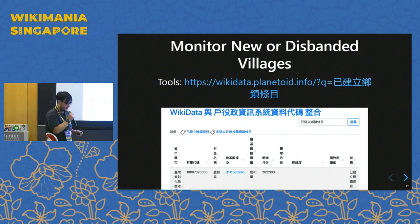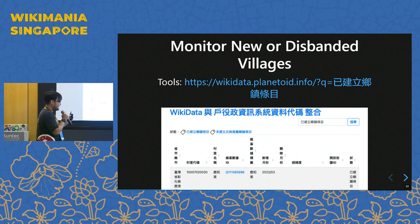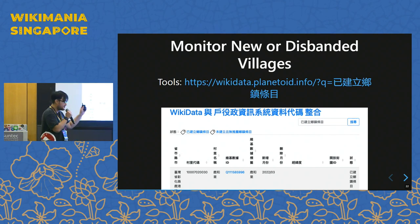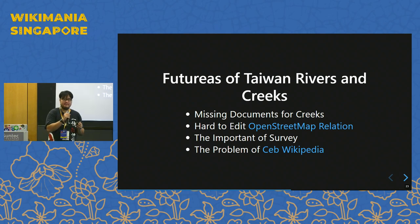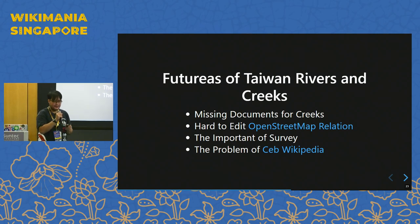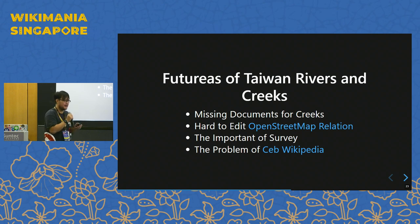We have some ability to cross-link using programs that monitor the government datasets. If there is a new village established or some village is removed or disbanded, we can use this website to monitor the situation. We also have a project that is cross-linking the rivers managed by the Taiwanese government — each has a unique ID. Some rivers are already written about on Chinese Wikipedia. And on OpenStreetMap, we also have to draw the river into a special form called an OpenStreetMap relation.